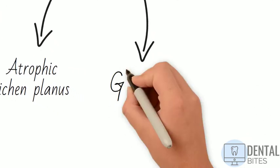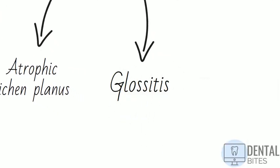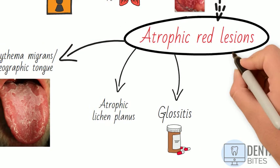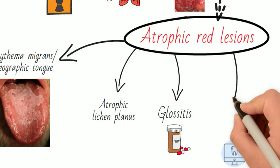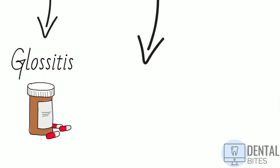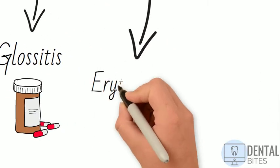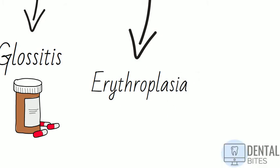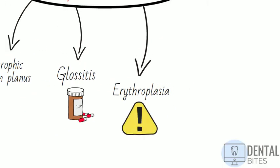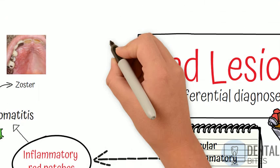Next we have glossitis, which can be caused by iron or other deficiencies, and this too can give a red atrophic appearance to the tongue. Lastly, erythroplasia is a red patch that is pre-malignant, so it's an important differential diagnosis for us to think about when examining a lesion and something we would need to biopsy.